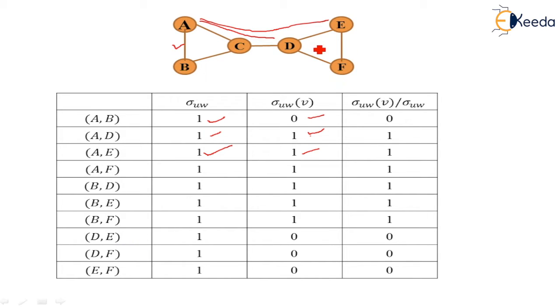D,E exists. Yes, D,E exists, but it is not passing through C, so we are writing 0. For if a path exists, we are writing 1. If it's passing through C and we write 1, if not we are writing 0. So we calculate all sigma_uw and sigma_uw(v).